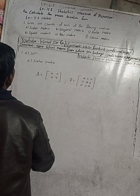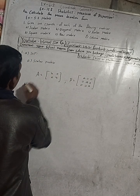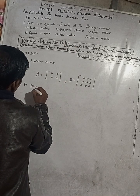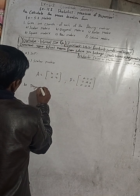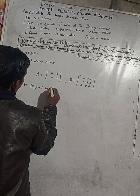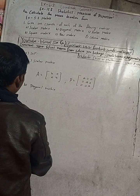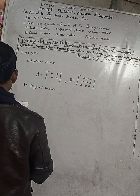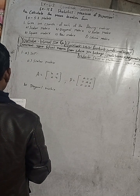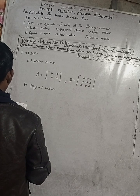Now, part B: the diagonal matrix. A diagonal matrix is a square matrix in which the elements except those in the leading or principal diagonal are zero.